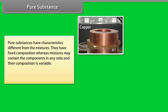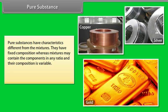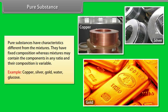Pure substances have characteristics different from the mixtures. They have fixed composition, whereas mixtures may contain the components in any ratio and their composition is variable. Examples: Copper, Silver, Gold, Water, Glucose.